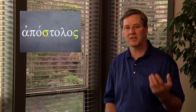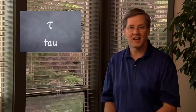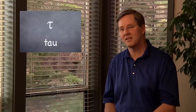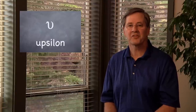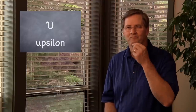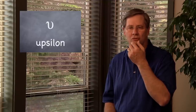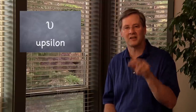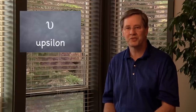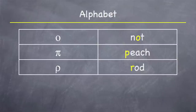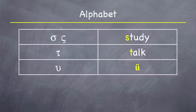So: omicron, pi, rho, sigma. The next letter is tau, which looks just like the English T and is pronounced like it — tau is pronounced like the T in 'talk.' After tau comes upsilon. You've got to kind of stick your lips out to say it properly, because upsilon is pronounced just like the German U with the umlaut. So: omicron, pi, rho, sigma, tau, upsilon.